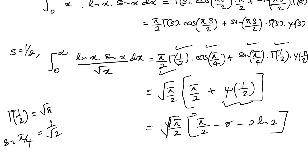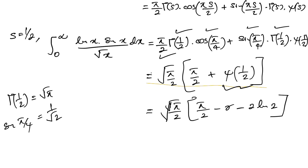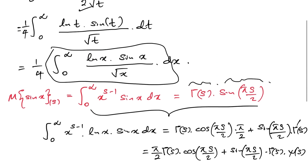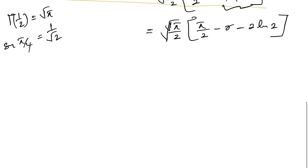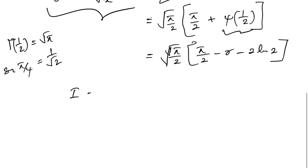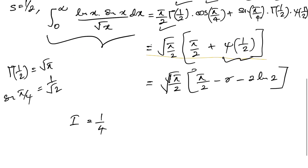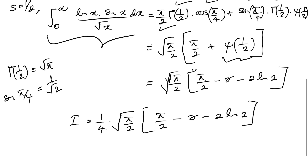Since our original integral I equals one quarter times this expression, the final answer is: I equals (1/4) times the square root of pi over 2 times the quantity pi over 2 minus gamma minus 2 times natural log of 2. If you like this type of video, please subscribe to the channel. Thank you for watching.